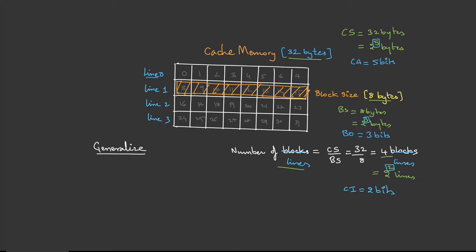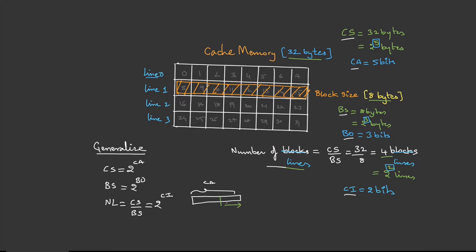To generalize: from the cache size we get the cache address bits, so cache size = 2 to the power of cache address bits. Block size = 2 to the power of block offset. From the number of lines we get the cache index, where number of lines = cache size divided by block size = 2 to the power of cache index. Within the cache address, the first few bits are the block offset and the rest are the cache index. We can call this the cache formula.